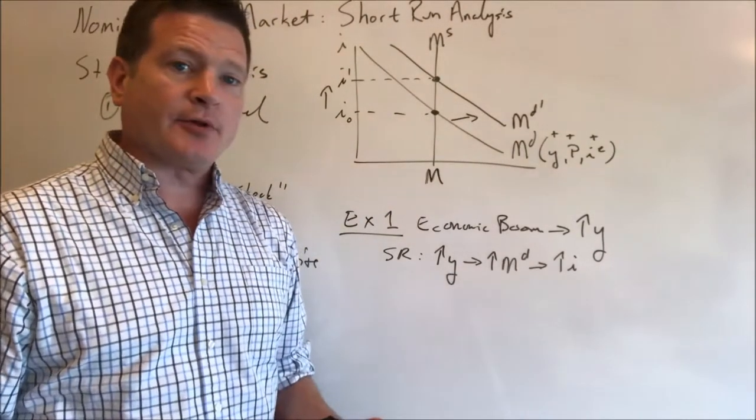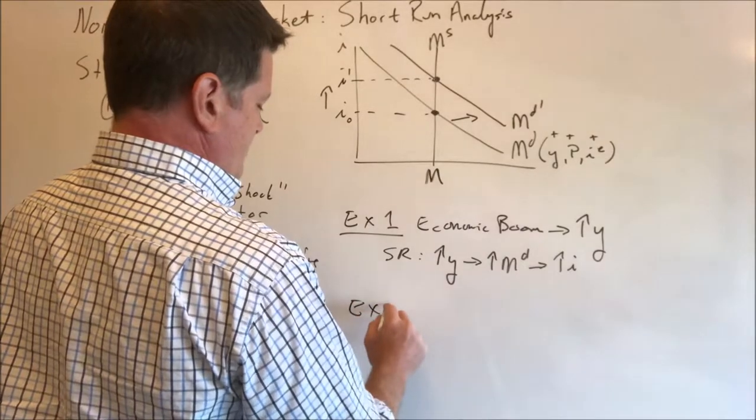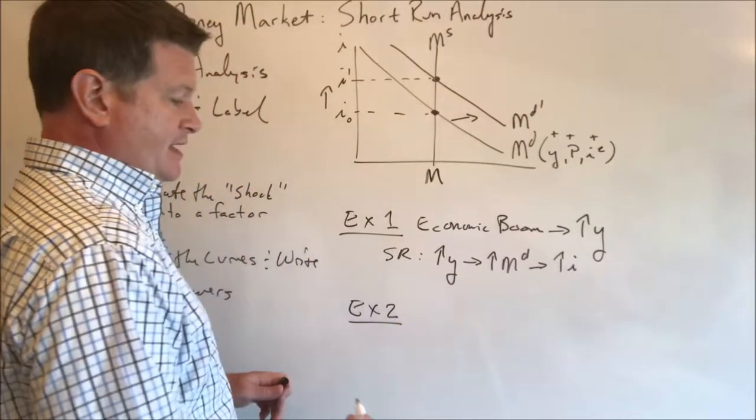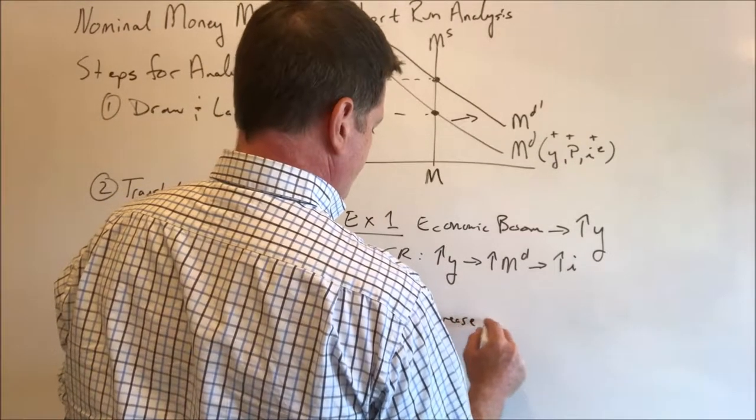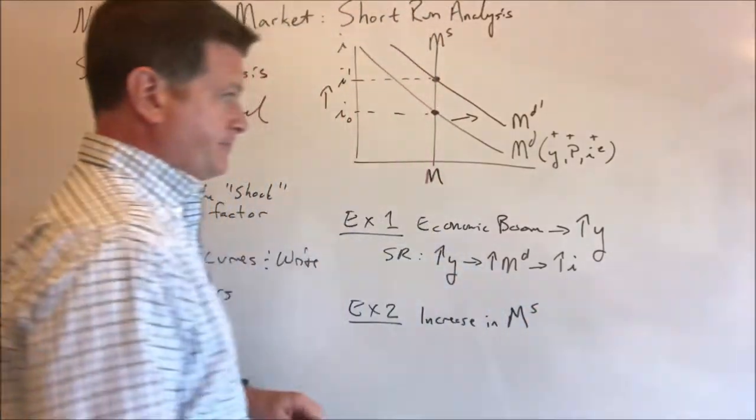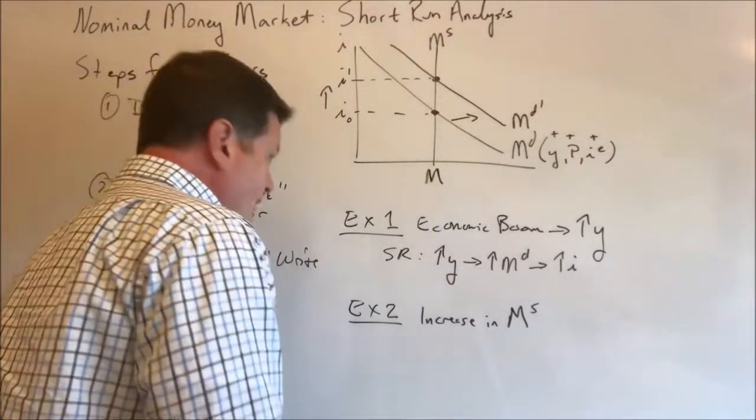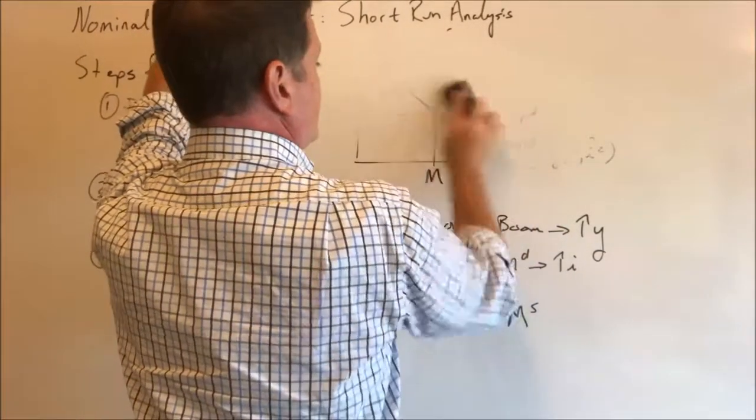As a second example, we could instead have an increase in the money supply. In that case, we can come back to here.